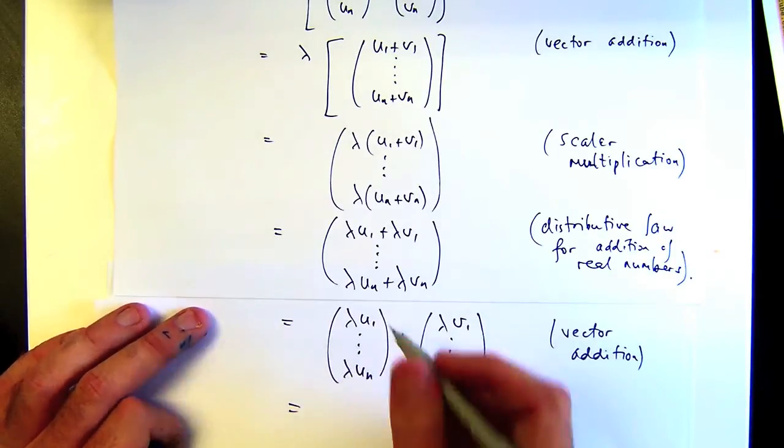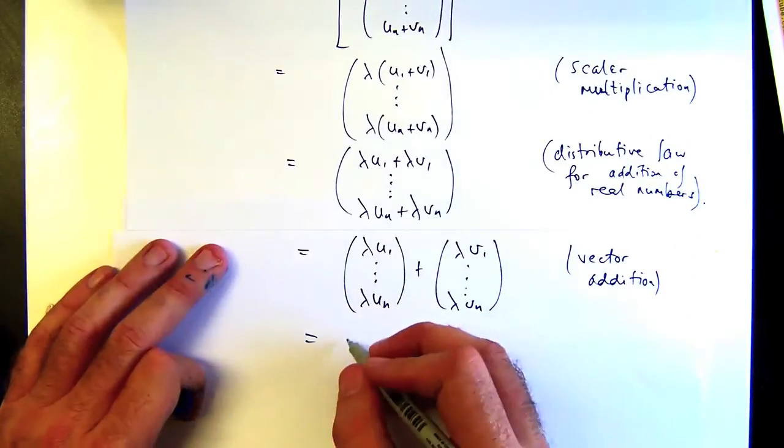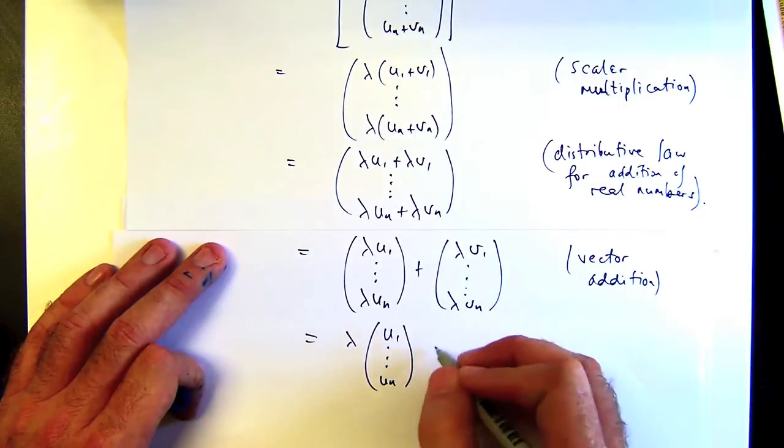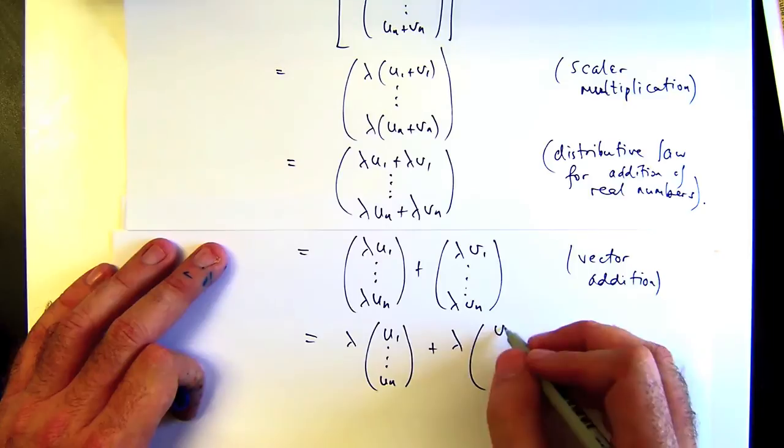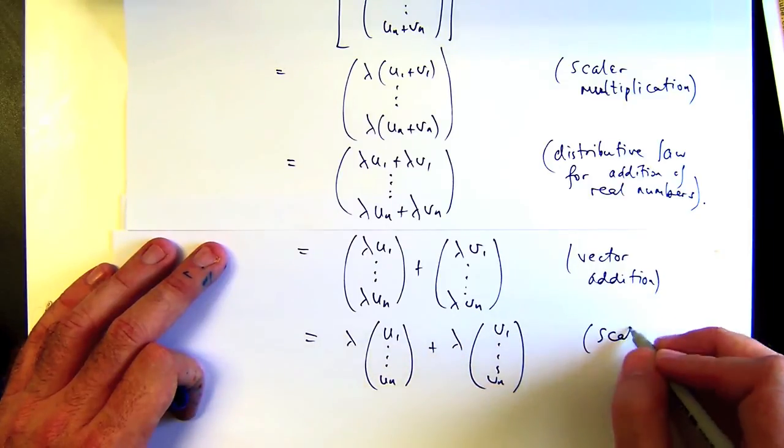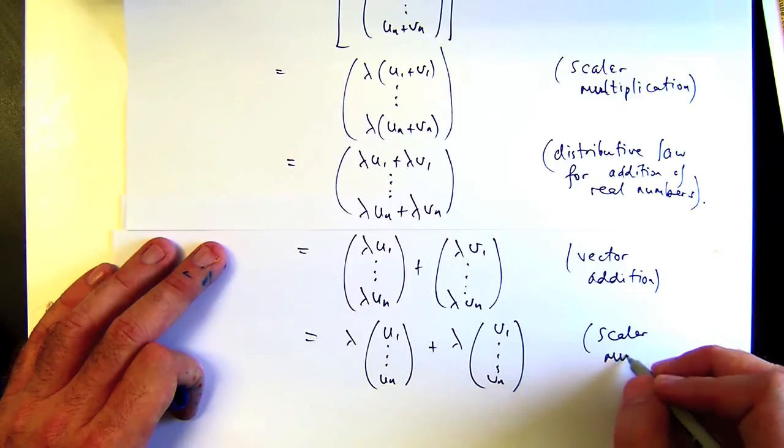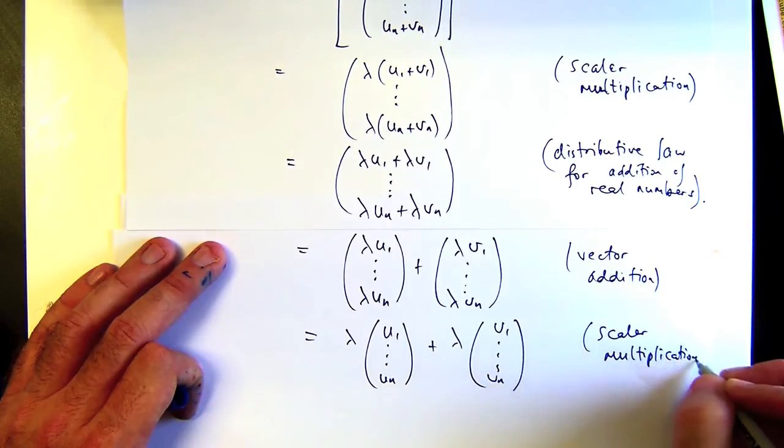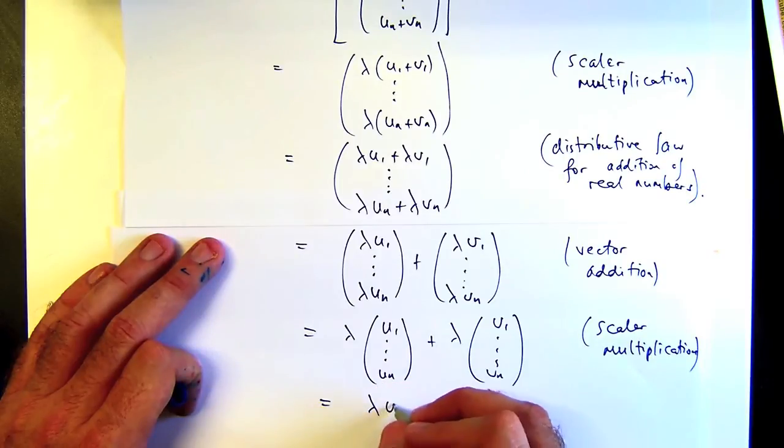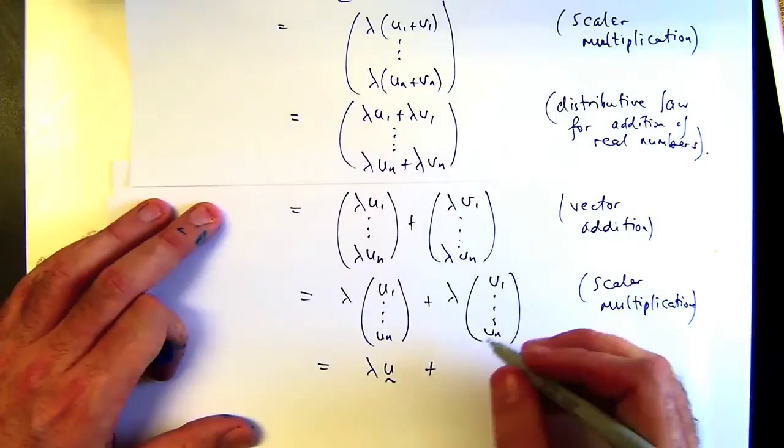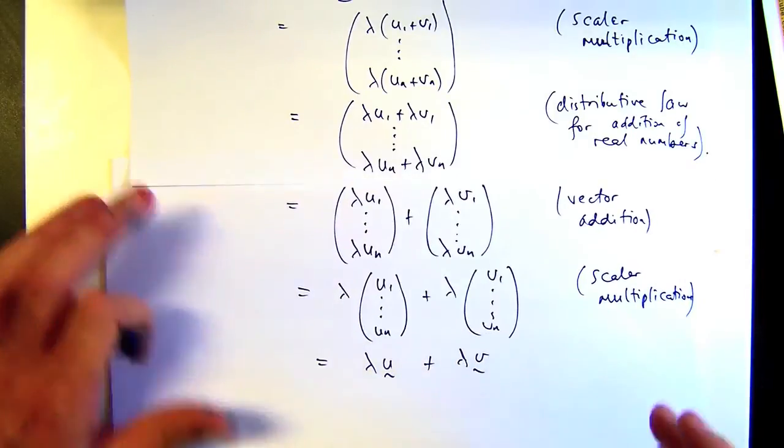And then I can write those as vectors. So that's scalar multiplication. And that's just this, which should equal the right-hand side of star.